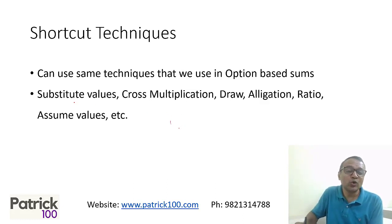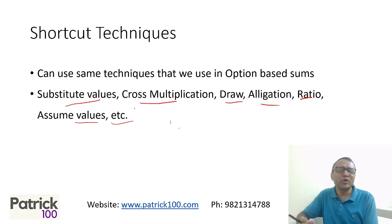What are the shortcut techniques? Normally the techniques are the same. What you use for normally option based questions, you can use the same techniques. I want to list them as such. You can use substituting values, cross multiplication, draw and get the answer, allegation, ratio, assume values, a lot of techniques.